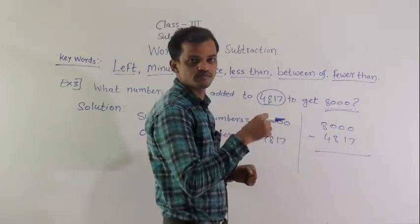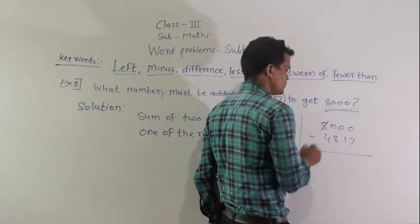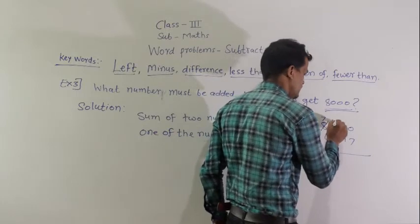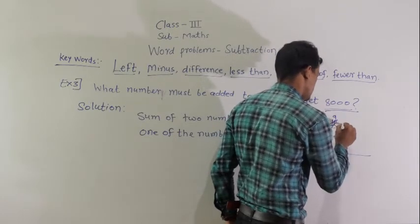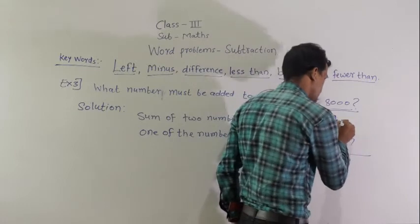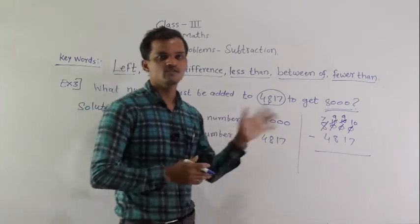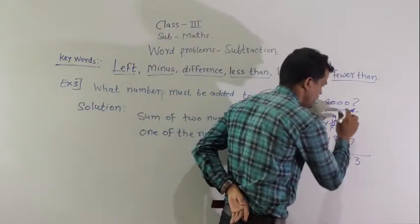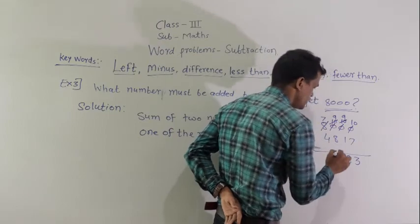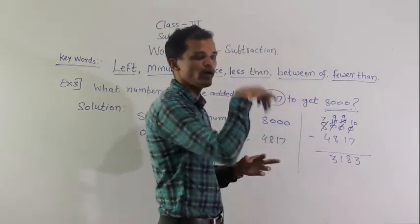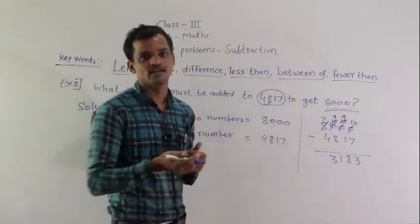We need to regroup because 0 minus 7 is not possible and 0 minus 1 is not possible. Regroup 8000: write 7 in the thousands, 10 at hundreds, then regroup again to get 9 at hundreds and 10 at tens, then 9 at tens and 10 at ones. Now subtract: 10 minus 7 is 3, 9 minus 1 is 8, 9 minus 8 is 1, and 7 minus 4 is 3. So the answer is 3183. This is the number that must be added to 4817 to get 8000.